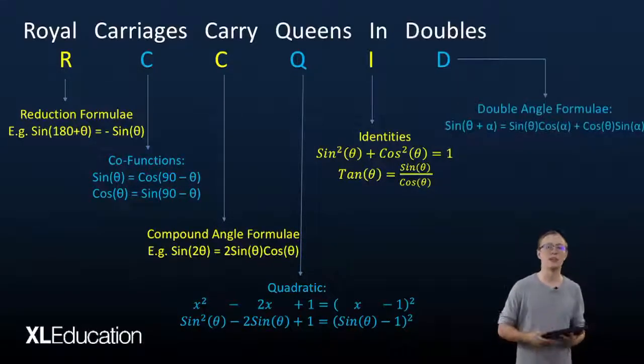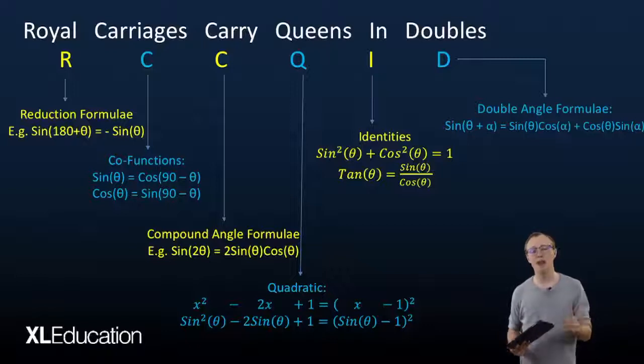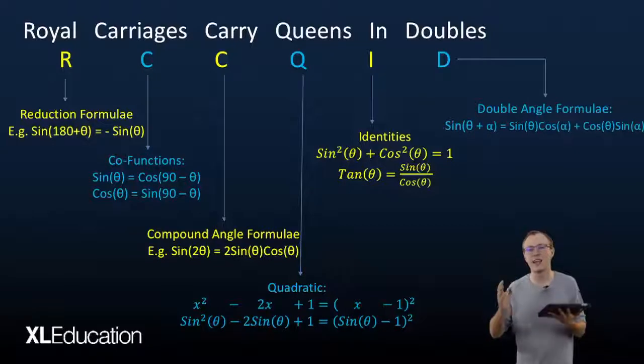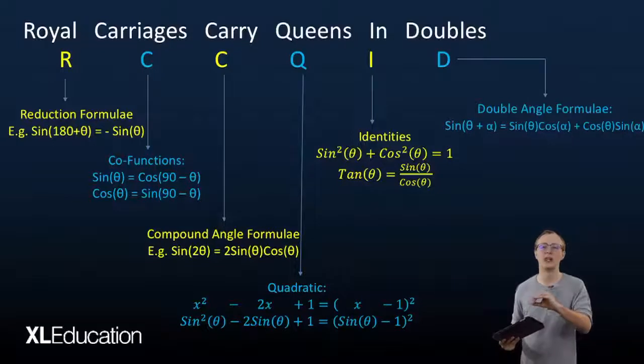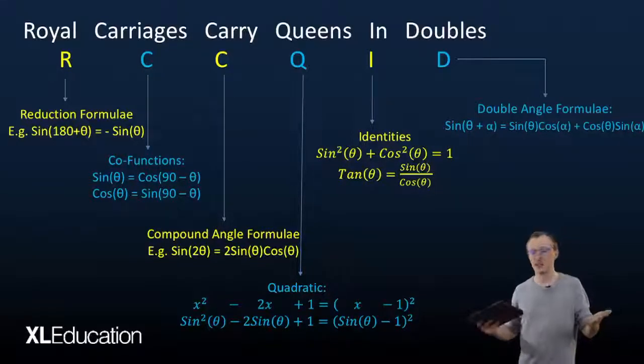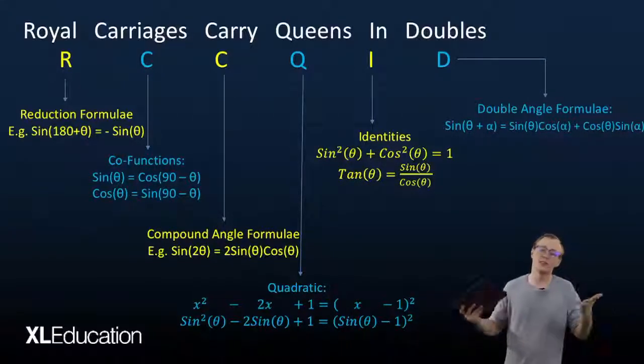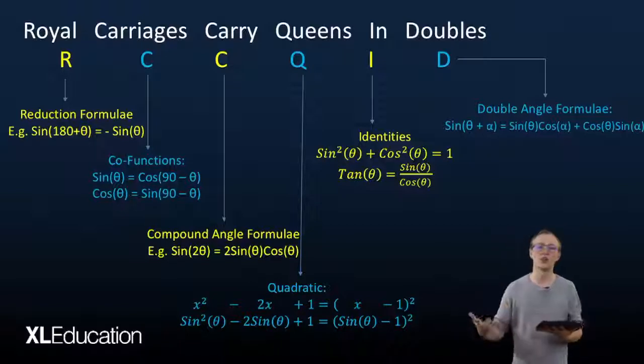And then doubles stands for our double angle formulae. So when you have an angle plus another angle within a trig function, it makes sense to try and use your double angle formulae in order to expand it first and hopefully then simplify it further, so you can show that what you had is equal to what you want to show that it is equal to.